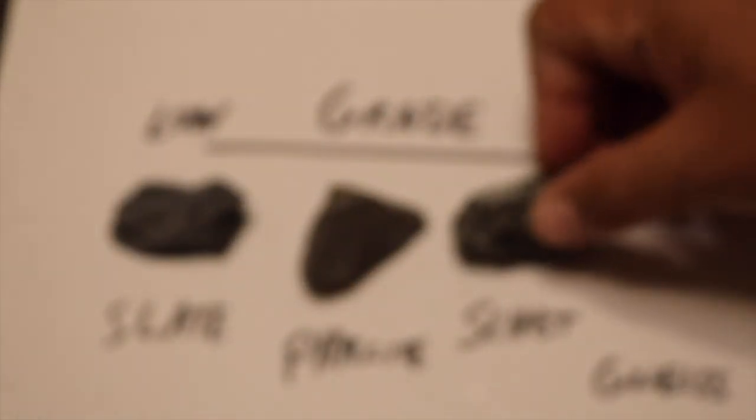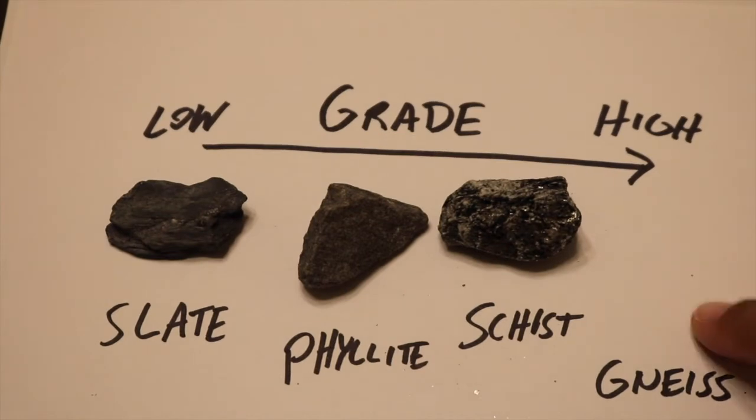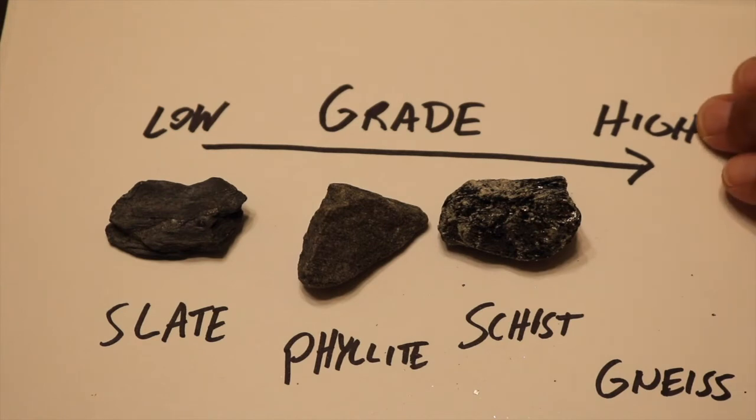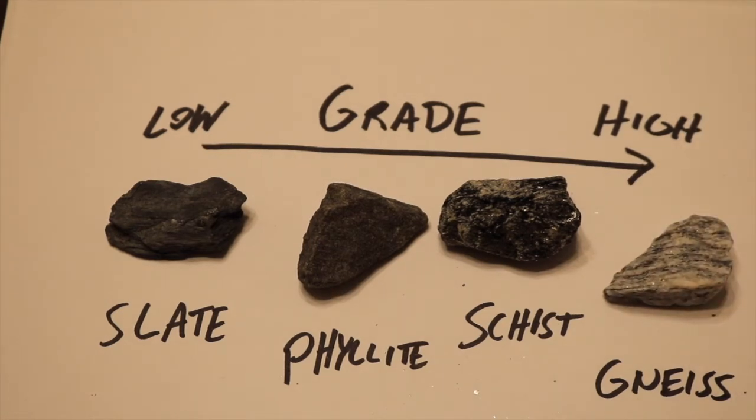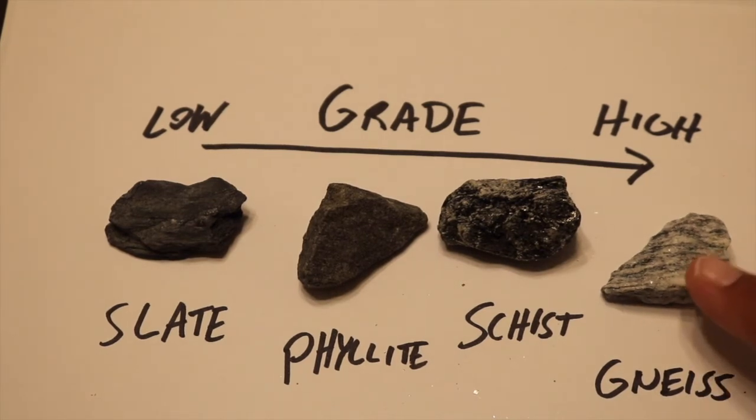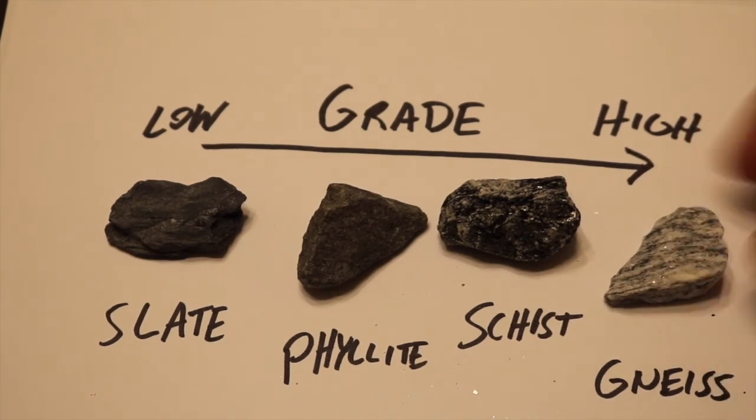That brings us to the last type of rock within our grading scale: gneiss. Gneiss essentially forms at one of the highest temperature and pressure conditions out of the metamorphic rocks. Here we have a pretty good example of a gneiss. This isn't the most highest grade gneiss that I've ever seen, but it's pretty close.